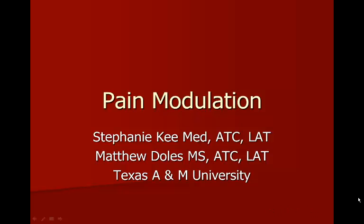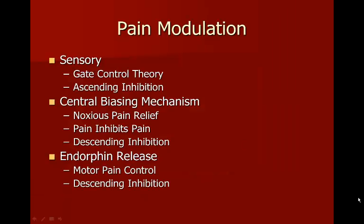There are three ways that we modulate pain. One is through the sensory using the gate control theory and ascending inhibition. There's also the central biasing mechanism — noxious pain relief where pain inhibits pain, creating pain to inhibit pain, which is a descending inhibition. And then there's endorphin release motor pain control, also a descending inhibition.